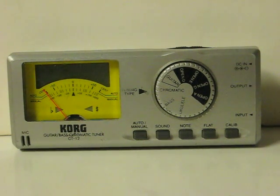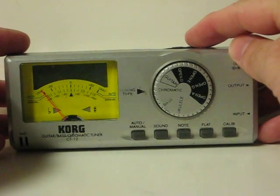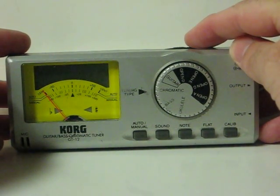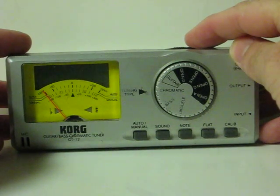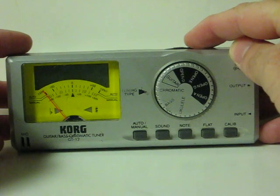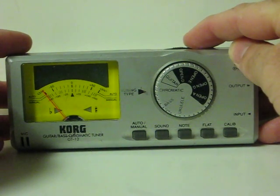This is a Korg GT12 guitar and bass chromatic tuner. It's going up for sale and this is just a quick demonstration to show how it works. I really couldn't find any demos to show how it's actually supposed to function, so I'm just going to show what it does as best I can here.